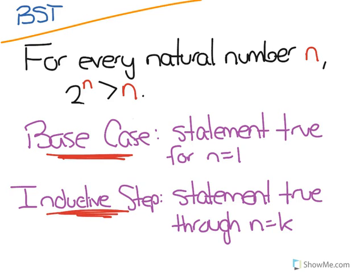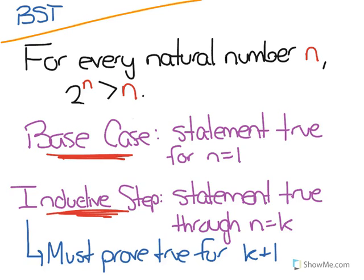We make an inductive hypothesis, and the rest of the proof is taken up trying to prove that the statement is true for k plus 1. And you prove that using your inductive hypothesis that you made during your inductive step.